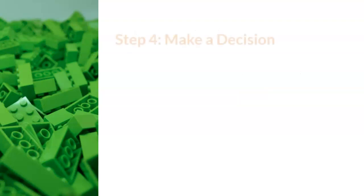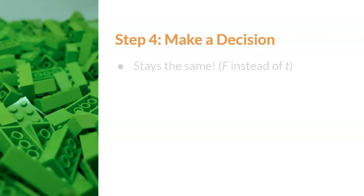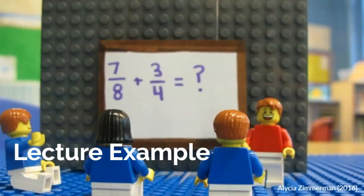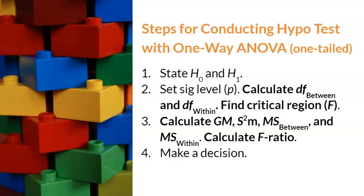Step four, the green Lego, is making a decision about whether the study worked or not. Fortunately, this step stays the same. In this test, we are using an F score instead of a T score. Now that we reviewed the steps of a hypothesis test with a one-way ANOVA, are you ready to practice? This is a short summary of the four steps described above. Please note that these steps are for a one-tailed hypothesis test with one-way ANOVA. Modifications for this test are noted in bold. Please pause the video to write down these steps on the video handout.